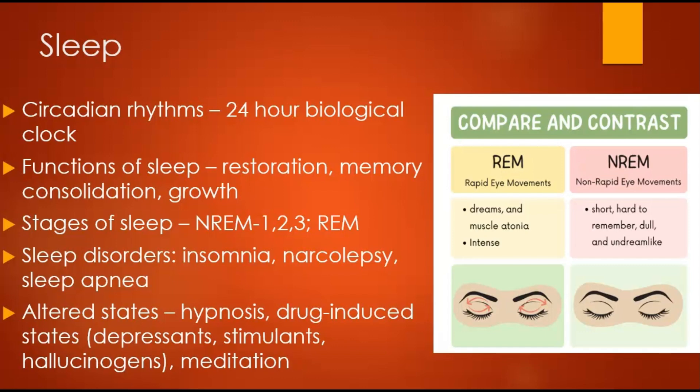We have non-rapid eye movement — NREM — sleep: NREM 1 is light sleep, NREM 2 is deeper sleep, and NREM 3 is the deepest, sometimes called slow wave sleep. Think delta waves — this is the most restorative type. We also have rapid eye movement — REM — where vivid dreaming happens. Brain activity during REM is similar to being awake, but your body is paralyzed to prevent you from acting out dreams. Common sleep conditions include narcolepsy, insomnia, and sleep apnea.